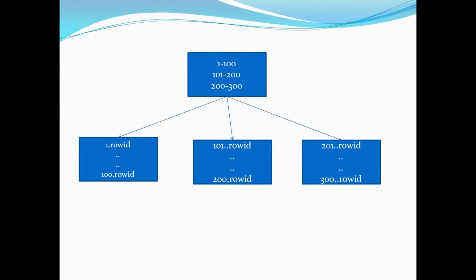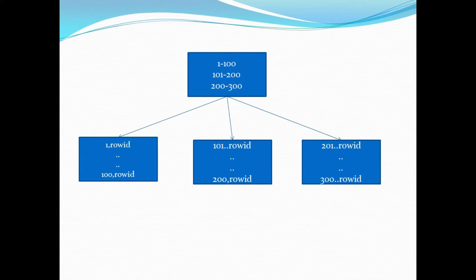This is how a normal B-tree index looks like. We have three leaf blocks and one branch block. The challenge is, as mentioned, the next row that is going to get inserted will have a higher order ID than the previous row. That means every time a new row is inserted into the order table, Oracle, in order to maintain the index, will go ahead and try to update this particular rightmost block.